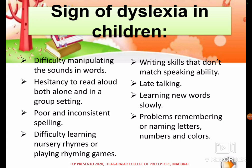When there is dyslexia among children, there will be difficulty manipulating the sounds in words — they don't know how to use them effectively. There will also be reluctance to read aloud, both alone and in a group setting. They have poor and inconsistent spelling, difficulty learning nursery rhymes or playing rhyming games, and writing skills that don't match their speaking ability.